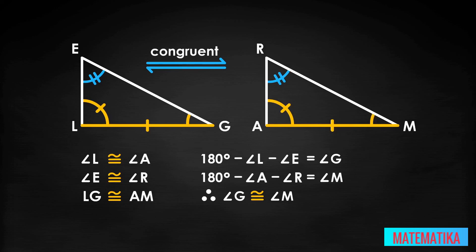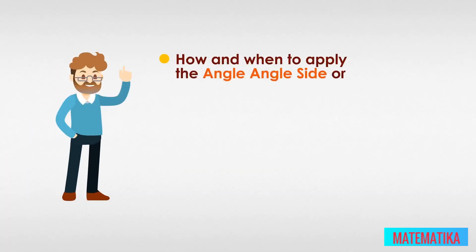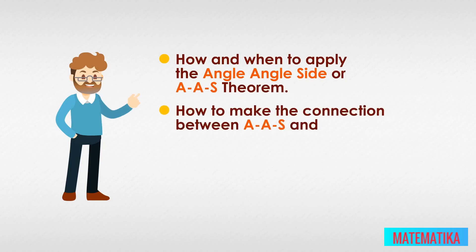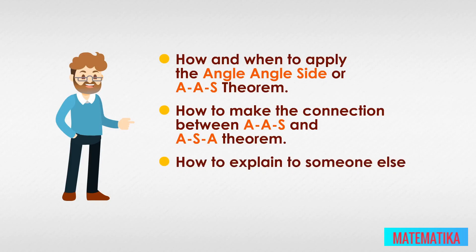In reality, we have no need of proving the third angles congruent and then deploying ASA, since we have, ready and waiting, the AAS theorem. So real mathematicians and geometricians just leap right to AAS and declare the two triangles congruent. You now know how and when to apply the angle-angle-side or AAS theorem, how to make the connection between AAS and ASA, and perhaps most helpful of all, how to explain to someone else how AAS helps to determine congruence in triangles.